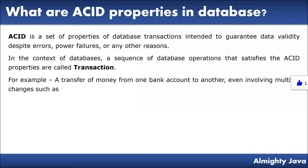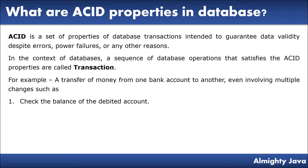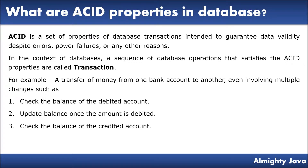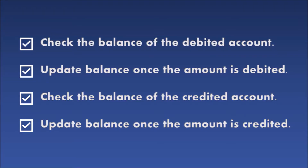For example, a transfer of money from one bank account to another involves multiple changes: check the balance of the debited account, update the balance once the amount is debited, check the balance of the credited account, and update the balance once the amount is credited. Because there are a series of operations, our system can process all the operations very quickly, but internally it is doing multiple operations.